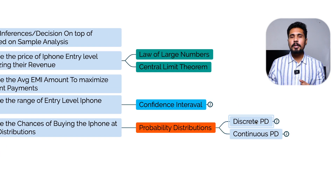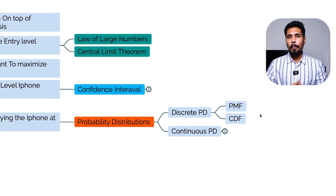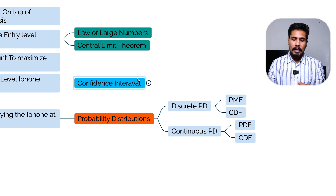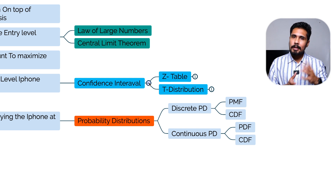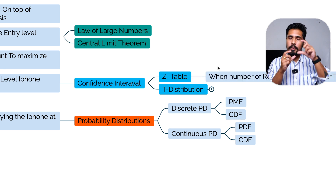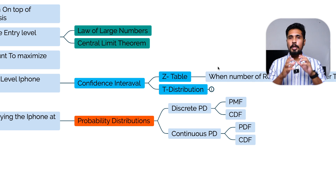Within probability distributions, there are two types: discrete probability distribution and continuous probability distribution. Discrete has probability mass function (PMF) and cumulative distribution function (CDF). Continuous has probability density function (PDF) and CDF as well. For confidence intervals, you use z-tables when the number of recorded values is greater than 30, and t-tables when the number of values is less than 30.